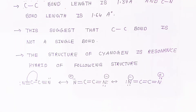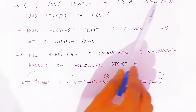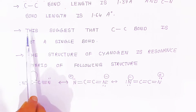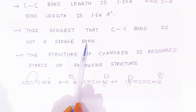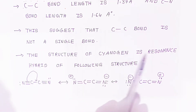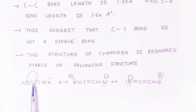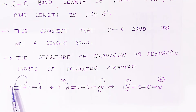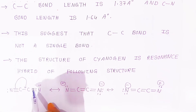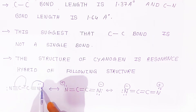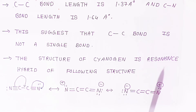The carbon-carbon bond length of 1.37 Ångström and carbon-nitrogen bond length of 1.64 Ångström suggest that the carbon-carbon bond is not a simple single bond. The structure of cyanogen is actually a resonance hybrid of several structures. Because of this resonance, the compound is stable. In the resonance structures, the carbon-carbon bond can become a double bond, and nitrogen atoms can carry positive or negative charges accordingly.